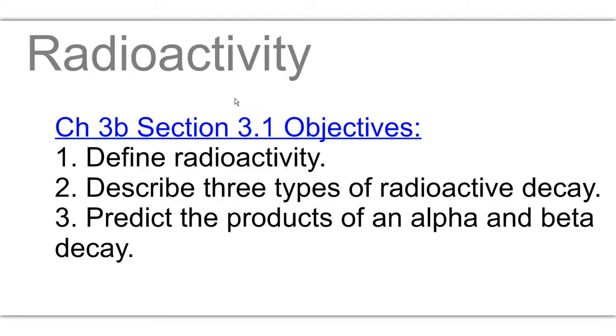Chapter 3B, Section 3.1. We're going to define radioactivity, describe three types of radioactive decay, and predict the products of alpha and beta decay.